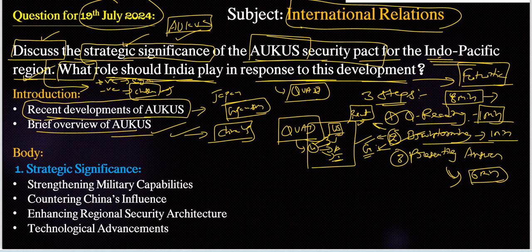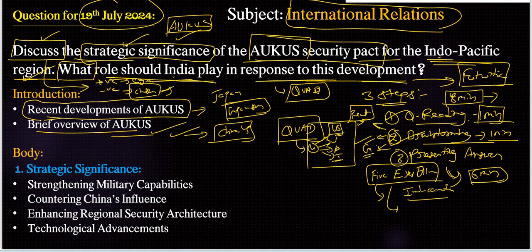We also have a former organization — the Five Eyes Alliance — which is an intelligence information-sharing agency, recently in the news regarding India-Canada relations. In this alliance, we have five countries: US, Canada, Australia, New Zealand, and UK. All these five countries are important regarding the Five Eyes Alliance group.